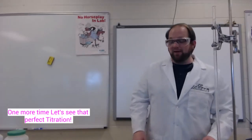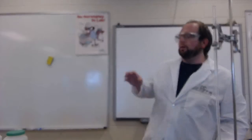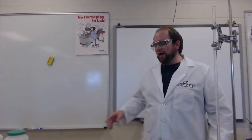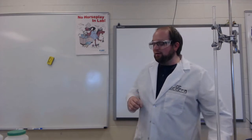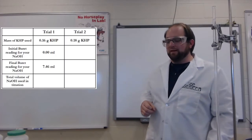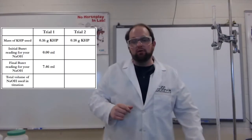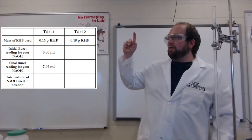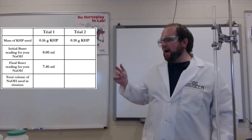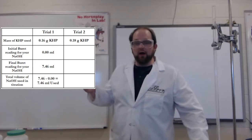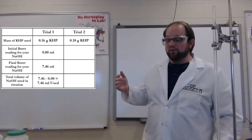Look at that lovely pink titration. That means the acid and the base were perfectly balanced between each other, meaning that I can use that as my first trial. It looks like we needed about 7.46 milliliters — that was my final volume amount. So I can take my final minus my initial to determine my total amount of base that was used.